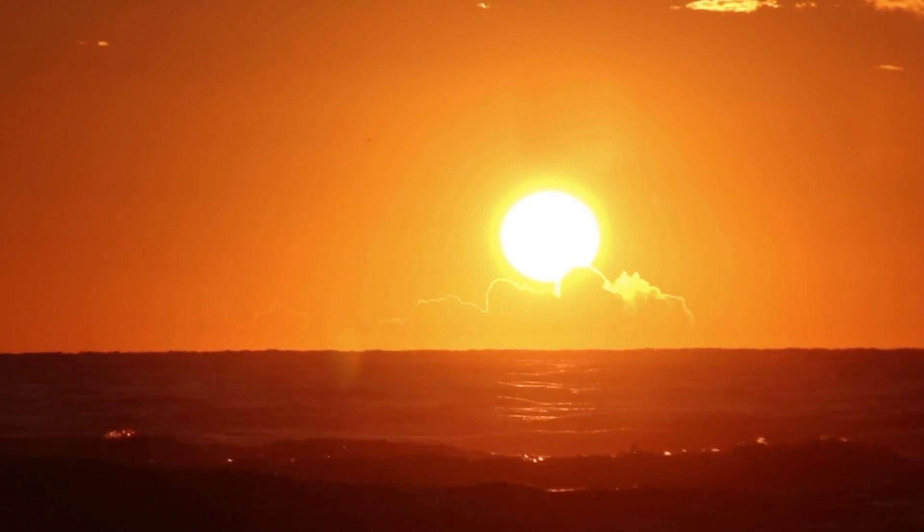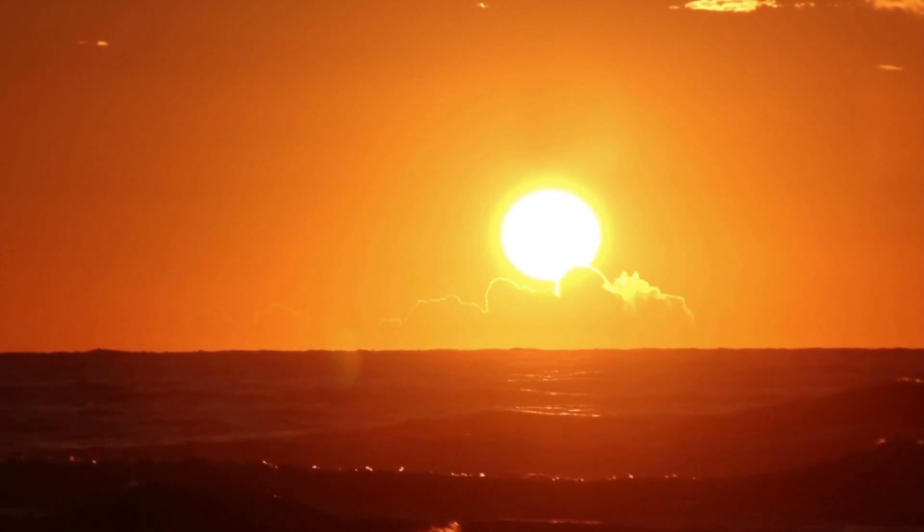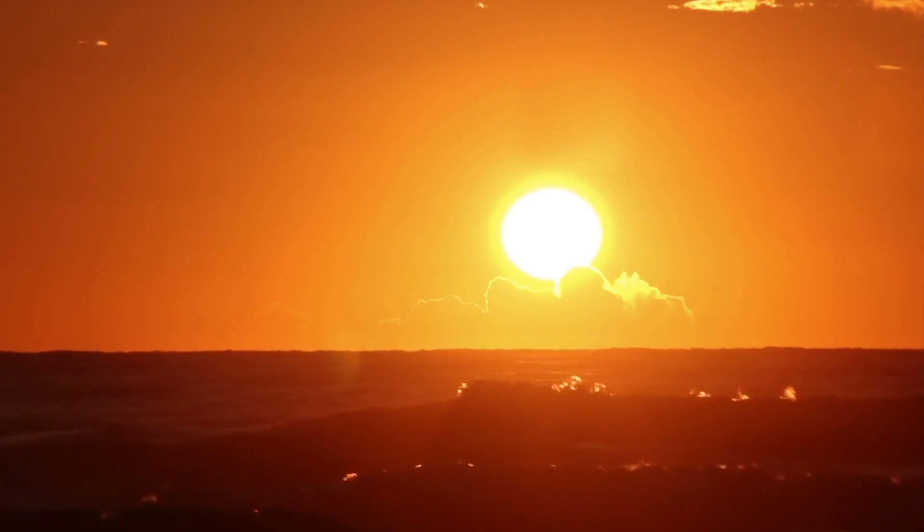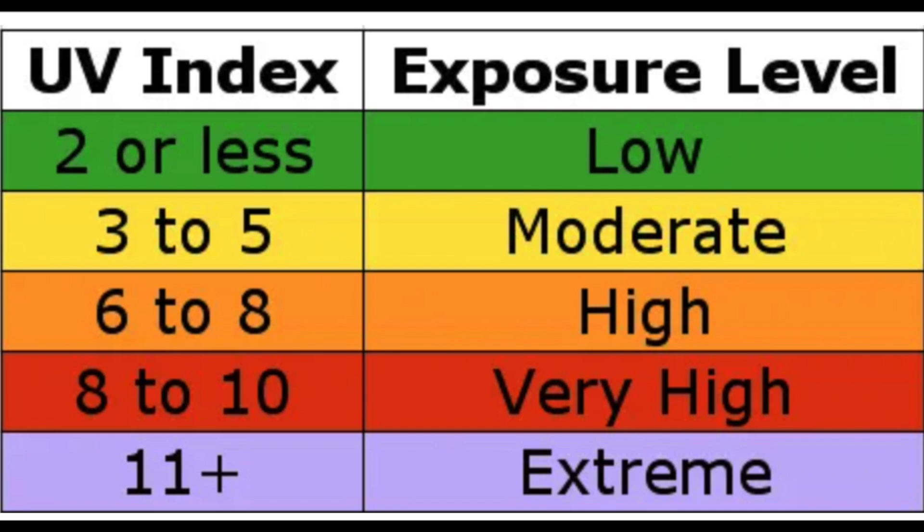The UV index is a forecast of the expected risk of overexposure to UV rays from the sun. It's a scale that predicts UV exposure from the sun at the earth's surface on any given day. It ranges from zero, or minimal risk, all the way up to 11 plus, extreme risk. Countries all over the world utilize the UV index as advocated by the World Health Organization, though each country differs slightly in how the calculation is determined. In the U.S., the National Weather Service and the Environmental Protection Agency are tasked with driving the UV index.